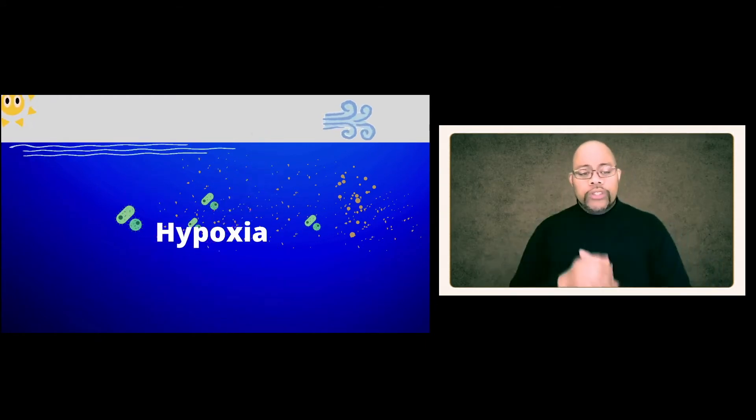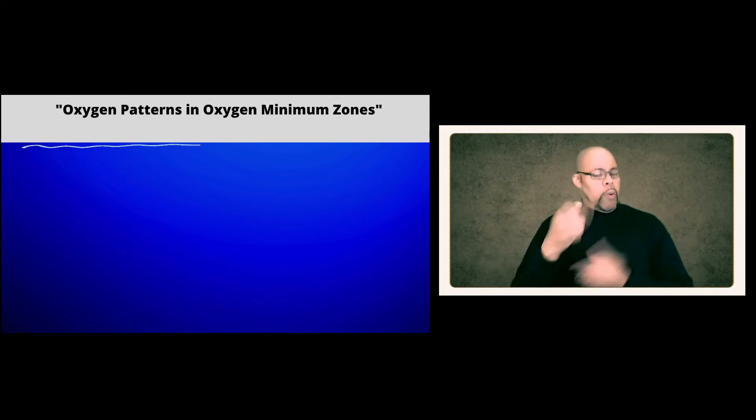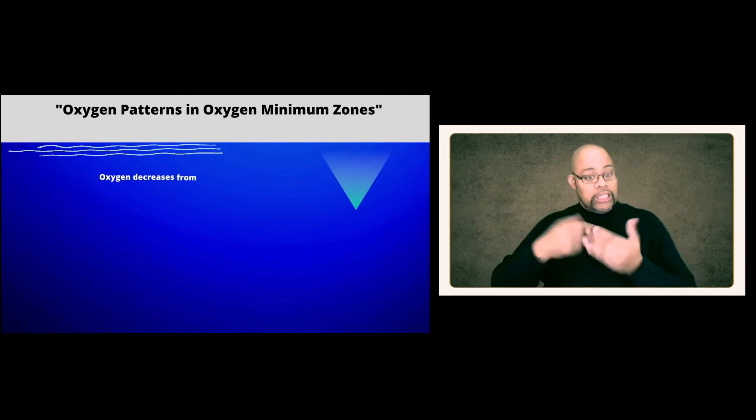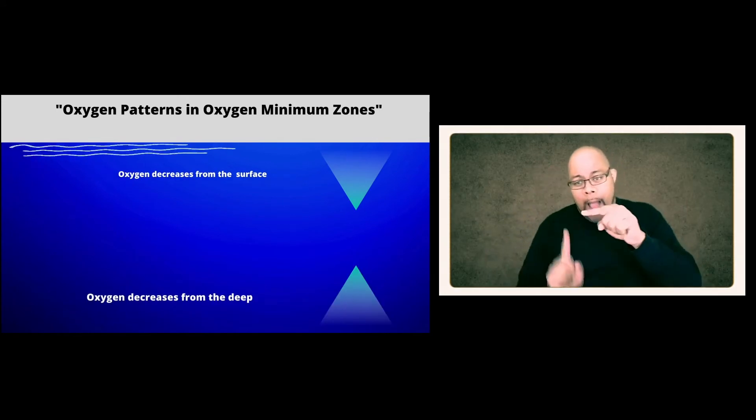So what are the typical patterns that we see in oxygen minimum zones? We see two of them. One that we just discussed, where we have oxygen that decreases from the surface to the interior of the ocean and oxygen that decreases from the deep all the way into the interior of the ocean. This creates a low band of oxygen in the center of the ocean.